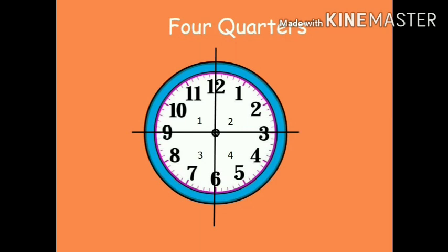From 6 to 9 it is again 15 minutes, so it is the third quarter — 15 plus 15 plus 15 is 45 minutes. And lastly, from 9 to 12 it is 15 minutes again, and it is the fourth quarter. So 15 plus 15 plus 15 plus 15 is a whole hour, that is 60 minutes.